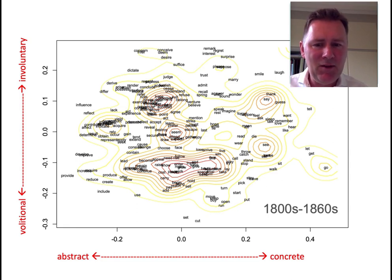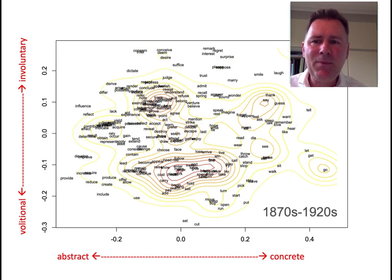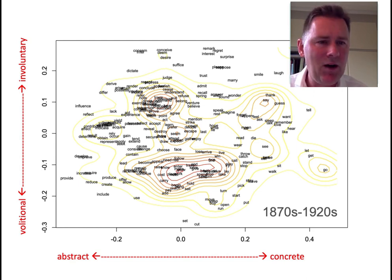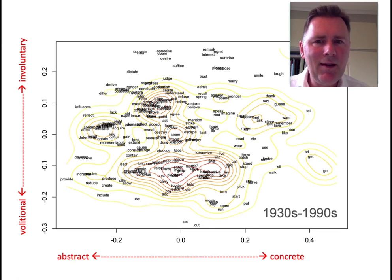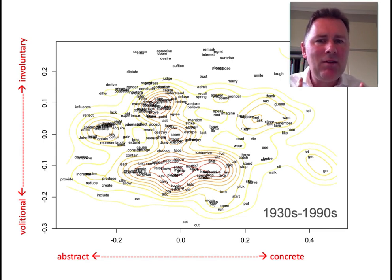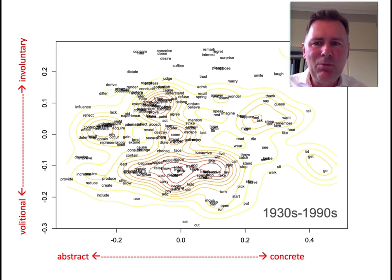With historical frequency information we can track changes in the peaks and valleys of the semantic landscape. As we move into the late 19th century and beginning of the 20th century, the permissive areas on the right of the graph thin out — the semantic areas around say and see become less populated. This trend continues into the second half of the 20th century, with a strengthening of clusters including verbs with which may conveys epistemic meanings, chiefly towards the left-hand side of the graph. My main aim here was to show the principle of mapping out a semantic space and using historical frequency information to visualize quantitative change within it.